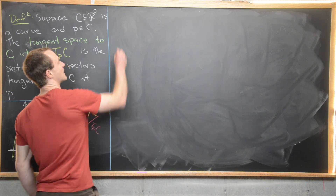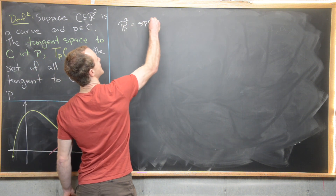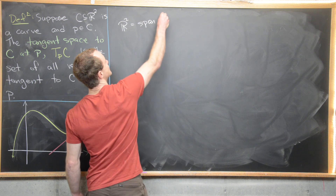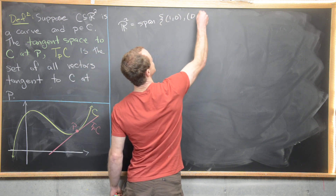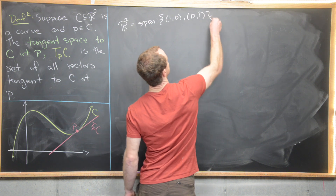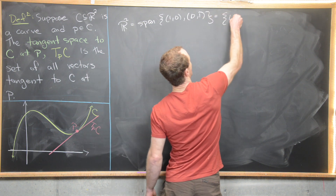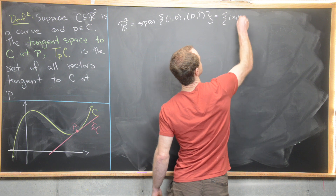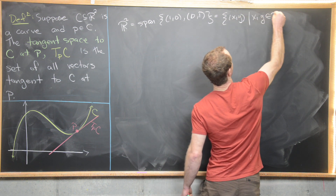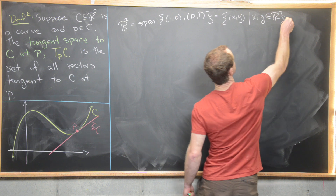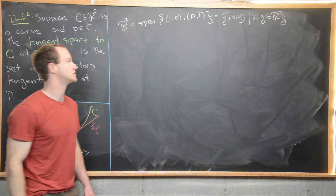R2 is equal to the span of the two vectors (1, 0) and (0, 1) — the standard basis vectors. That equals all points (x, y) as x and y range over all values of R, which obviously builds every point in R2.